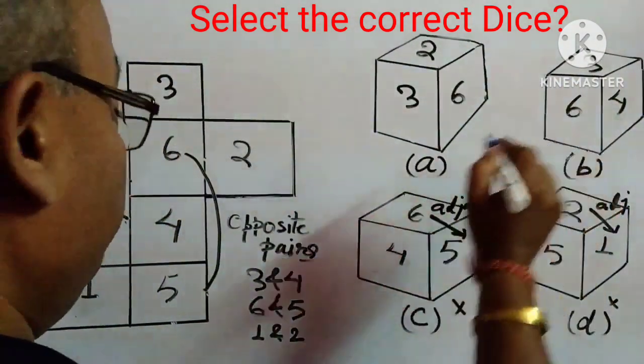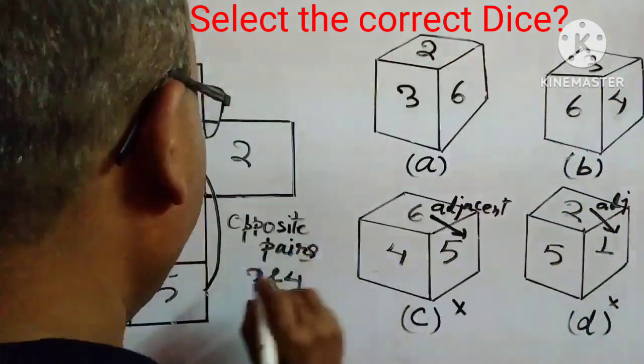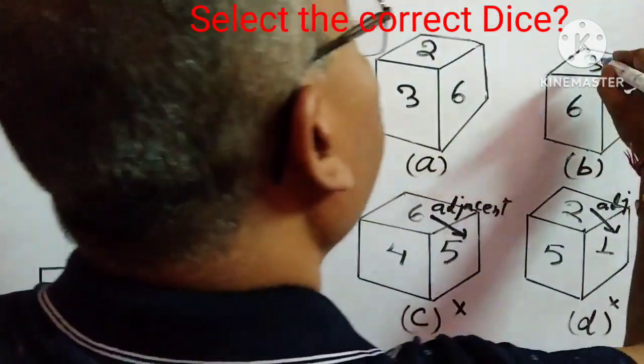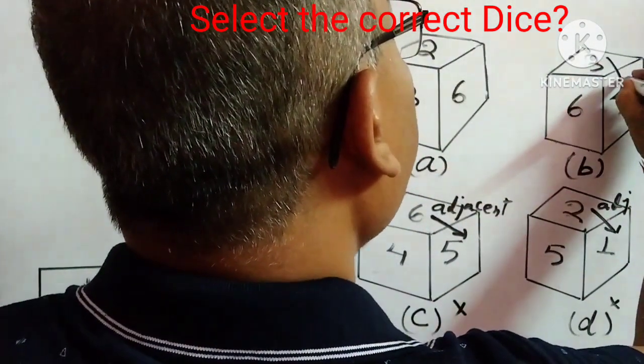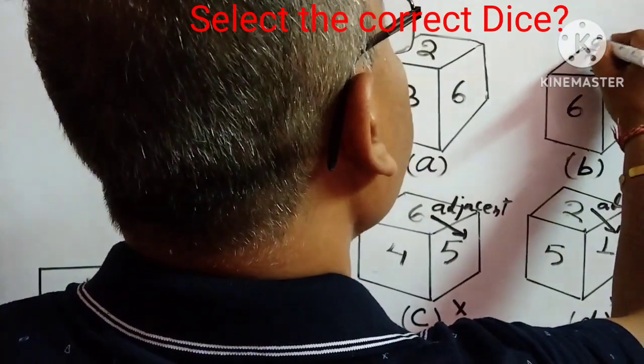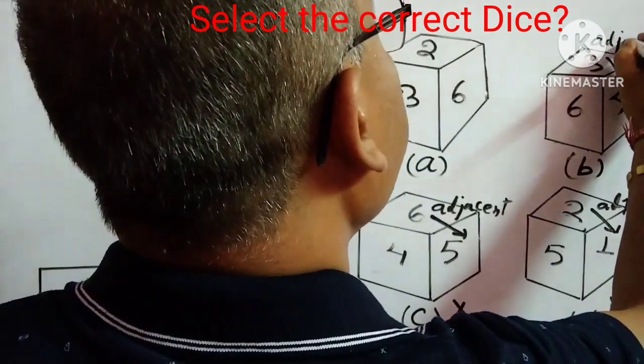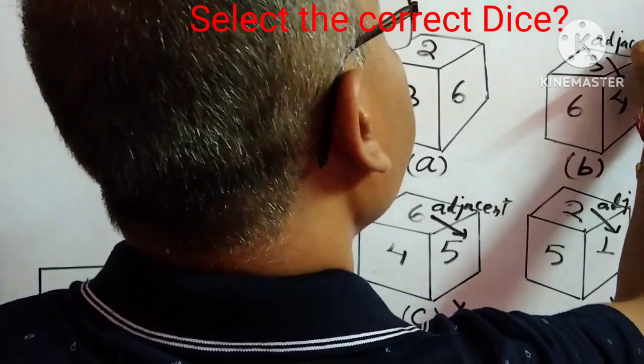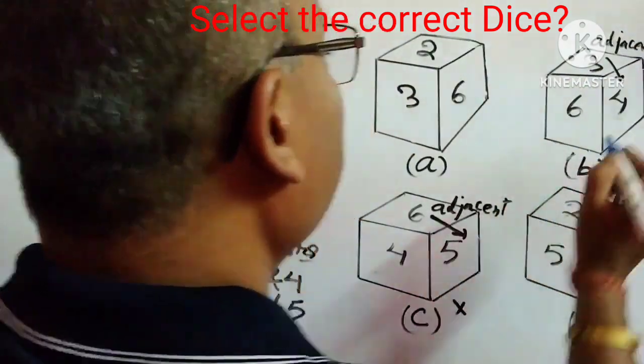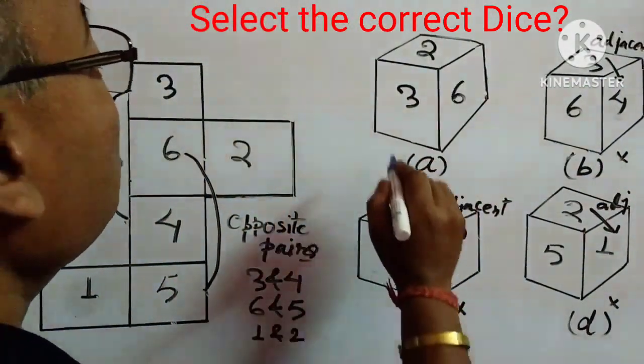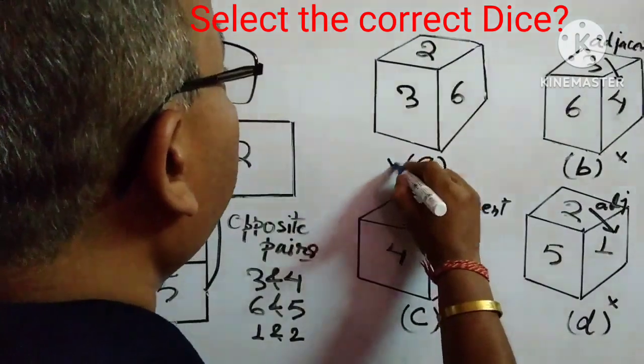Now, we will come to this one, see, 3 and 4, 3 and 4 are opposite pairs. Again, we are observing that 3 and 4 are given adjacent, so this is adjacent, so this option can't be. So, we are left with this one, so this should be the answer.